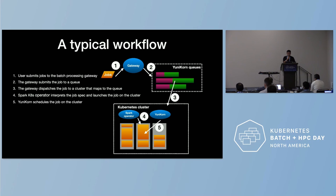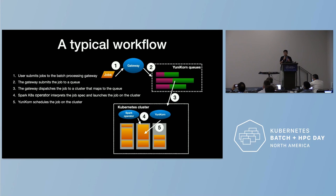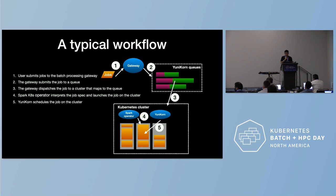A typical workflow: when users submit their jobs, they interact with our gateway service, which exposes a REST API and command-line interface. Once the job is submitted, the gateway submits it to a queue. This queue is a very central concept in our system — what we call virtual queues. The resources for these virtual queues come from one or more Kubernetes clusters. Then the gateway dispatches the job to a dedicated cluster to run.